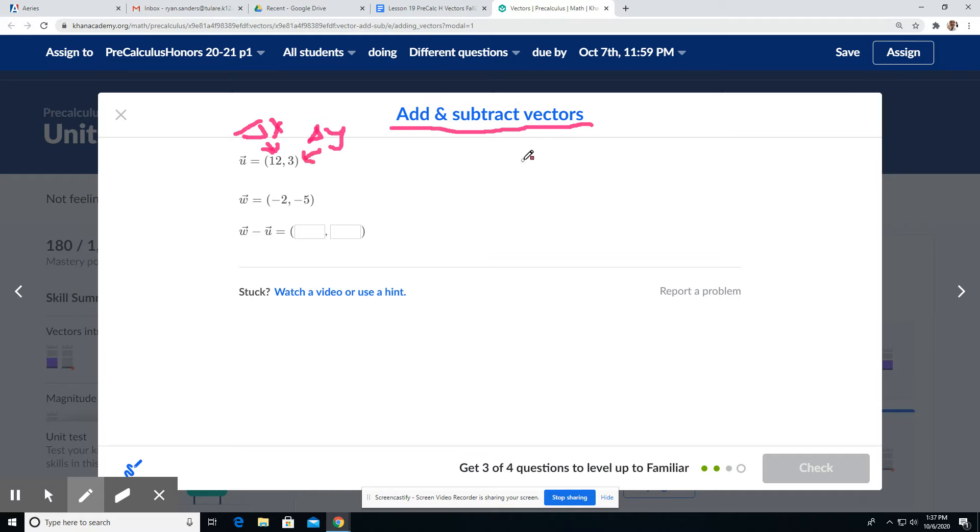So let's go ahead and focus on the X's. All right, so the change in X1 is 12. The change in X2 is negative 2. But we just need to be careful about the order here. It's W minus U. So what that minus does is it distributes to both the 12 and the 3.